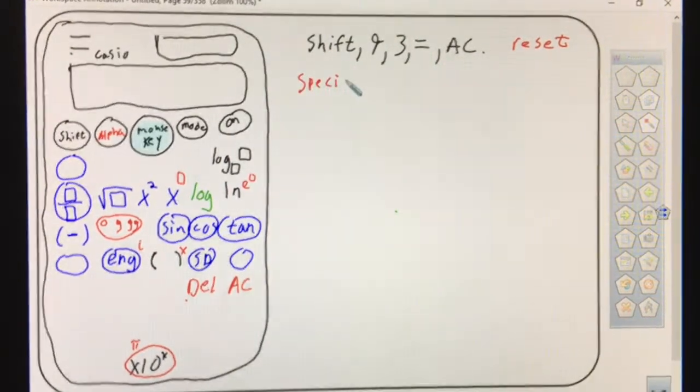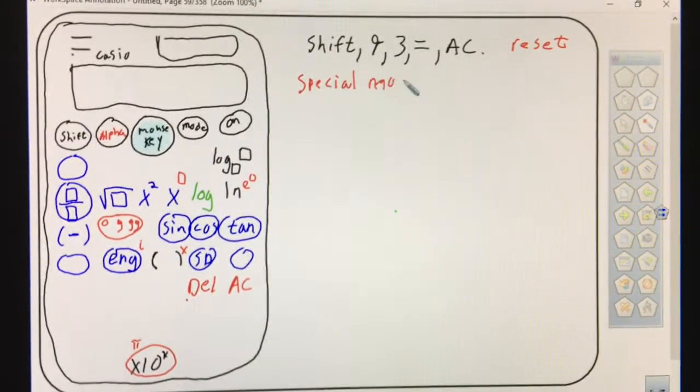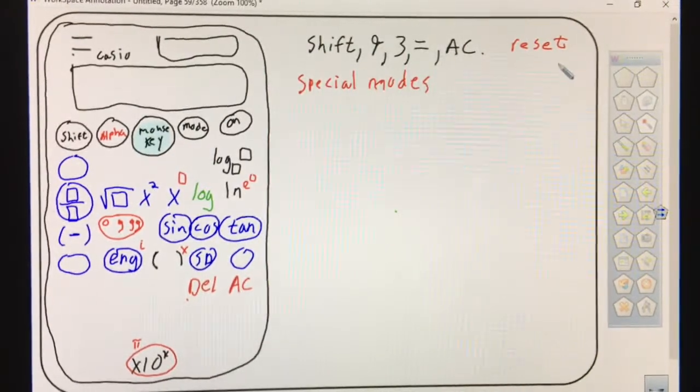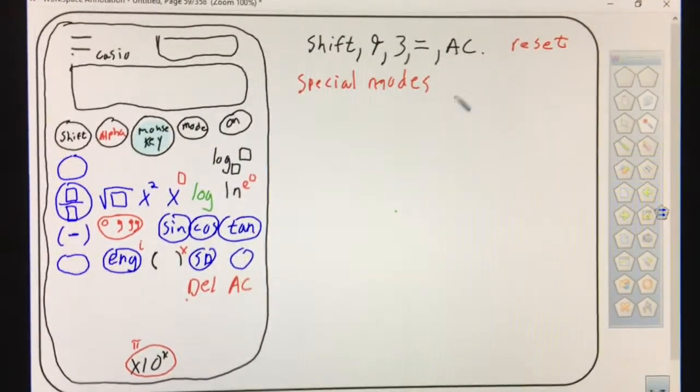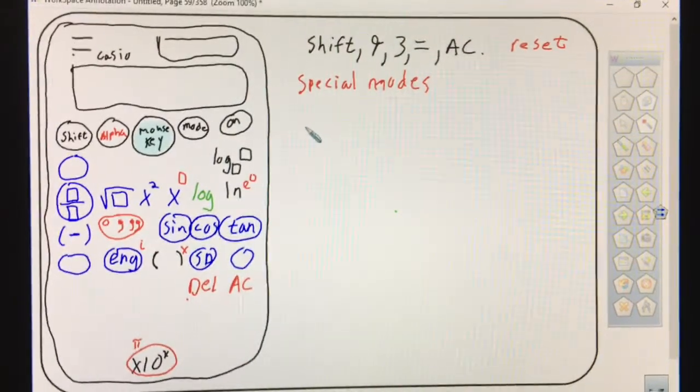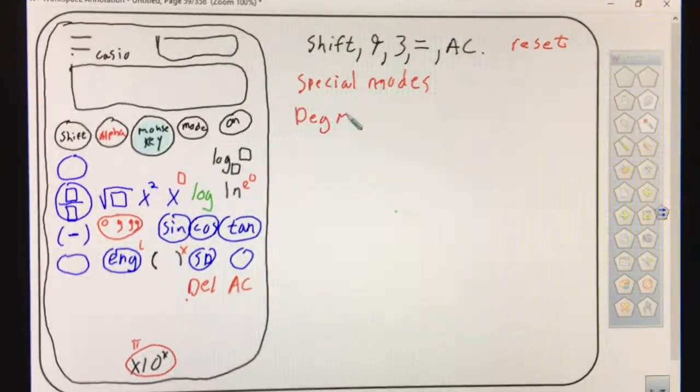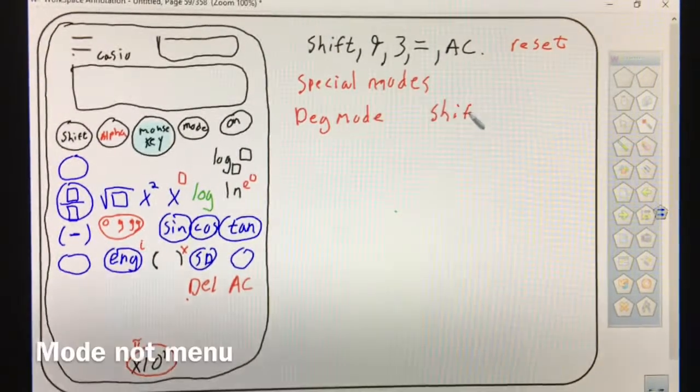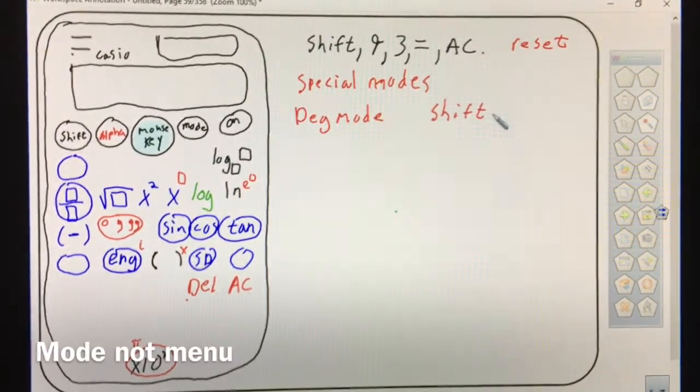Special modes. Right now when you do that, you're going to be in normal computational mode, degree mode. You're going to hit shift, setup - it's actually the menu button but it's also called setup.